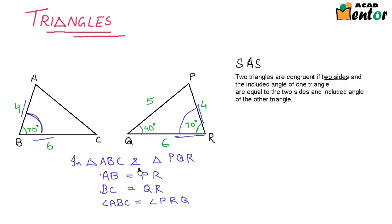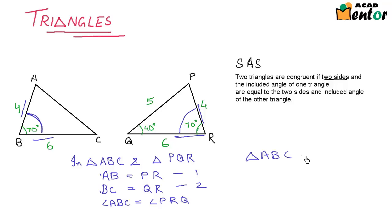Now I have two sides equal — AB equals PR and BC equals QR — and also the included angle ABC equals angle PRQ. So these two triangles are congruent. But writing triangle ABC congruent to triangle PQR would be wrong. Although the triangles are congruent, you have to take care of the nomenclature.